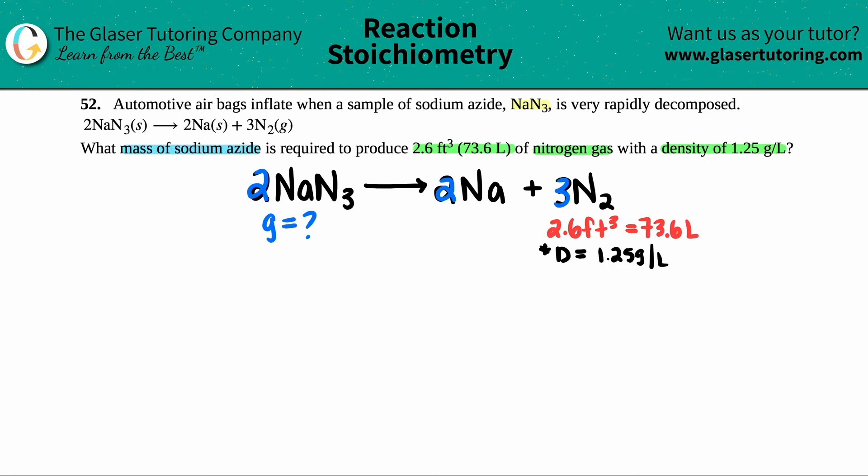Now when they give us information of one compound and they're asking us for information of another compound and the only relationship that those compounds have are through a balanced equation, we're doing stoichiometry. Stoichiometry is just a fancy way for use ratios and conversion fractions with balanced equations to go from one compound to another.